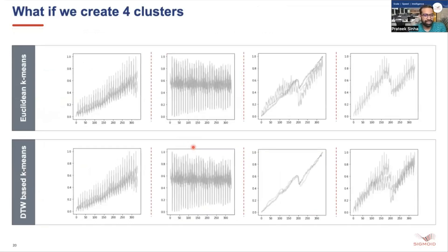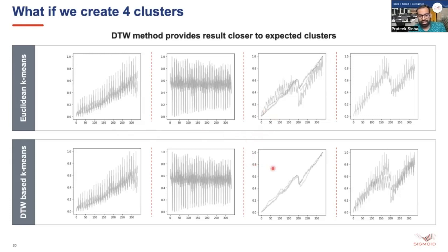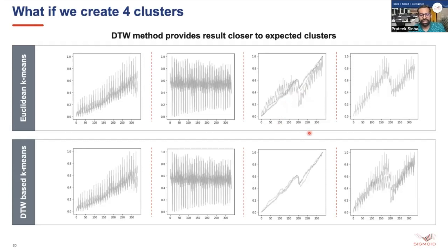If we create four clusters and look closely at both approaches, we see that the DTW-based method gives results closer to the expected clusters. For example, we wanted to have the fluctuating plots together in the same cluster, which we get in the DTW-based result, but in the Euclidean one we have an overlap of both. So the DTW-based approach works better for this data set.